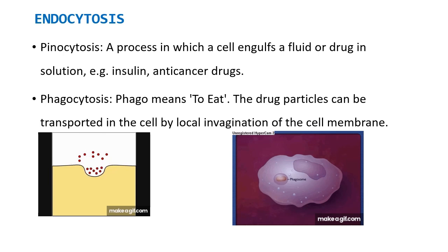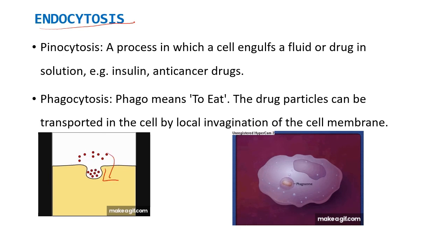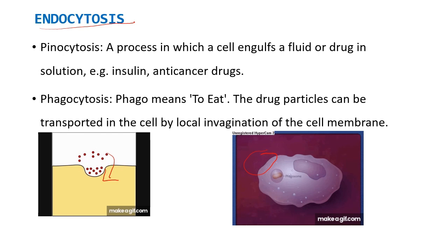Next is endocytosis. First is pinocytosis — a process in which a cell engulfs a fluid or drug in solution, as you can see in the figure. Next is phagocytosis — 'phago' means to eat. The drug particle can be transported into the cell by local invagination of the cell membrane, meaning a folding of the outer layer to take the drug particle inside. That is phagocytosis.